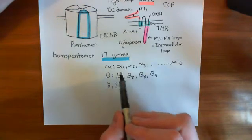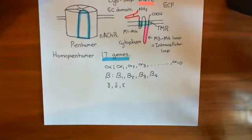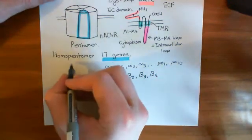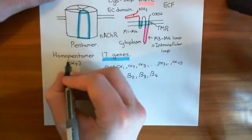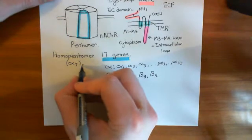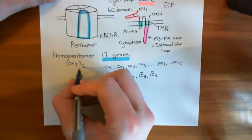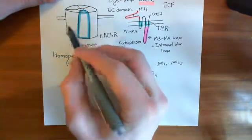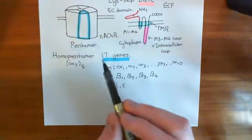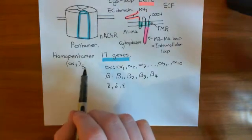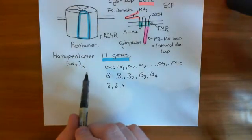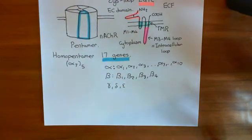For alpha 1, that alpha 1 homopentamer is not actually seen that much in the body. An example of a homopentamer that's seen a lot is alpha 7. In the brain you have a huge number of these alpha 7 — denoted as alpha 7 to the power of 5 — meaning five alpha 7 subunits all put together to make the nicotinic acetylcholine receptor homopentamer. These alpha 7 homopentameric nicotinic acetylcholine receptors in the brain are very important for nicotine addiction, however they're not important at the neuromuscular junction.